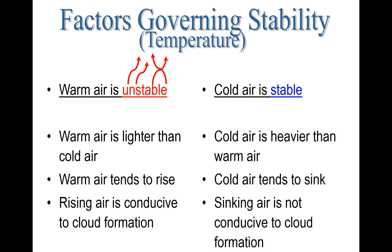On the other hand, cold air is heavier and denser — it's always wanting to sink towards the Earth's surface. It tends to sink, and sinking air is not conducive to cloud formation. Whenever air sinks in the atmosphere, think no clouds. The red arrows indicate upward or rising vertical air motion with warmer air because it's unstable, and with cold air the blue arrows go down, indicating atmospheric stability.